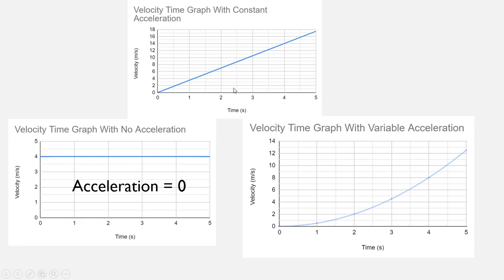The next case is where you have constant acceleration, and you can tell this by a straight line on a graph. When we want to find the acceleration here, we use the gradient. Because it's a straight line, the gradient is going to be the same everywhere, so we can pick any two points and find the gradient, and that will give us the acceleration.